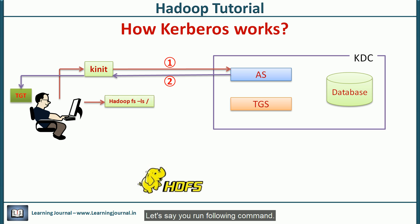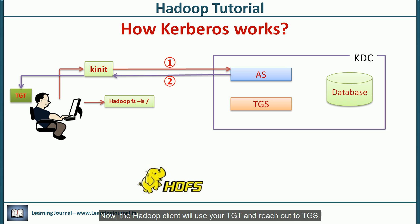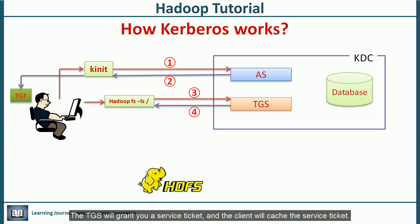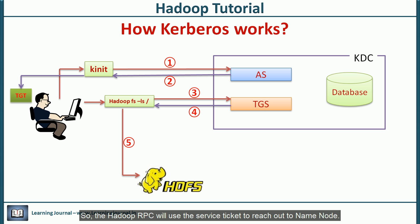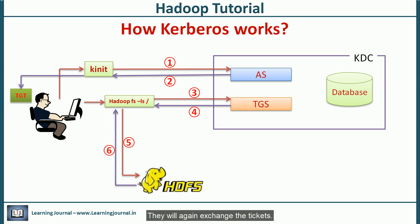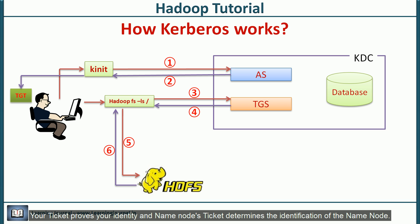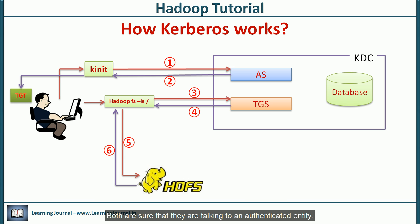Let's say you run a Hadoop command — that's a Hadoop client. The Hadoop client will use your TGT and reach out to TGS. The client approaches TGS to ask for a service ticket for the name node service. The TGS will grant you a service ticket and the client will cache it. Now you have a ticket to communicate with the name node, so the Hadoop RPC will use the service ticket to reach out to the name node. They will exchange tickets — your ticket proves your identity and the name node's ticket determines the identification of the name node. Both are sure they are talking to an authenticated entity. We call this mutual authentication.